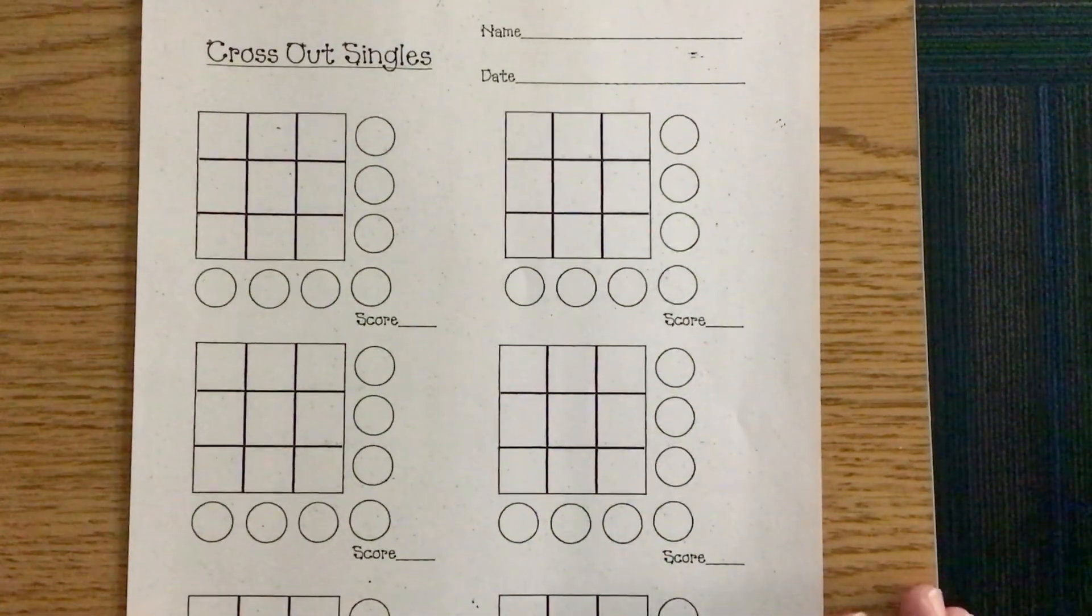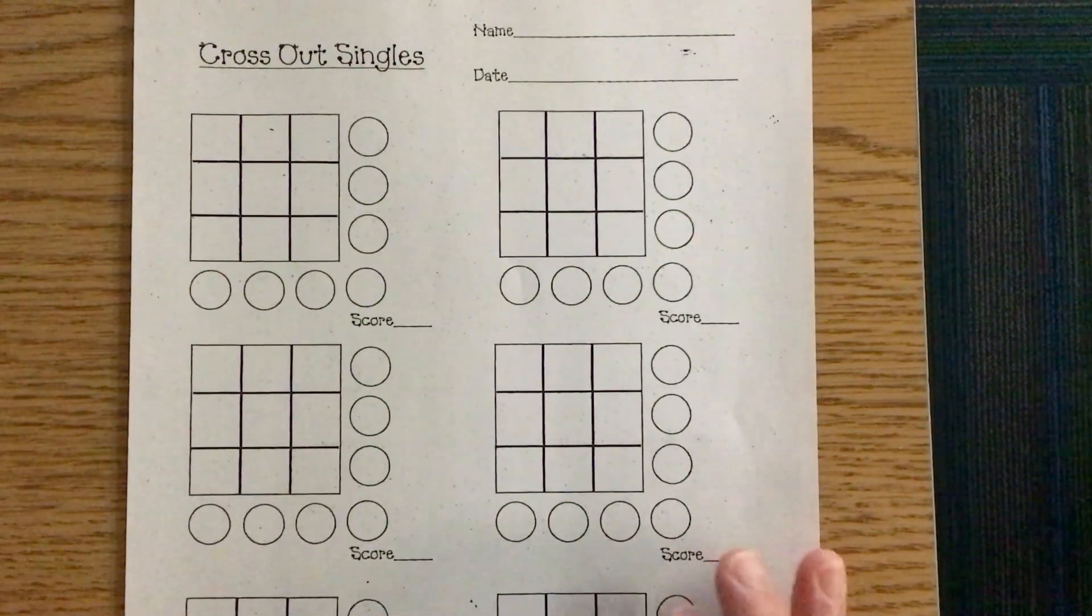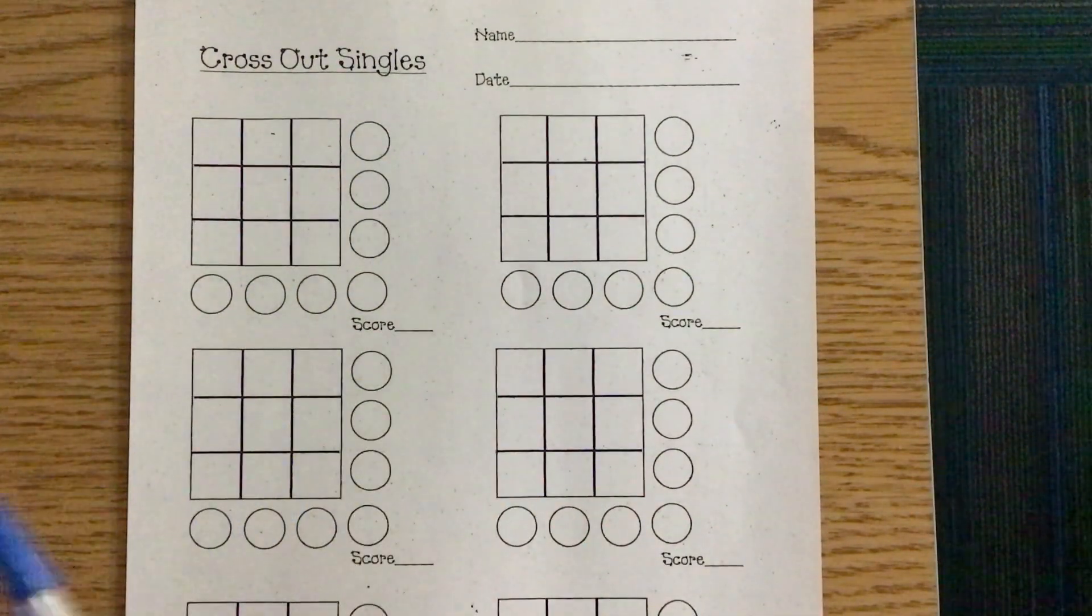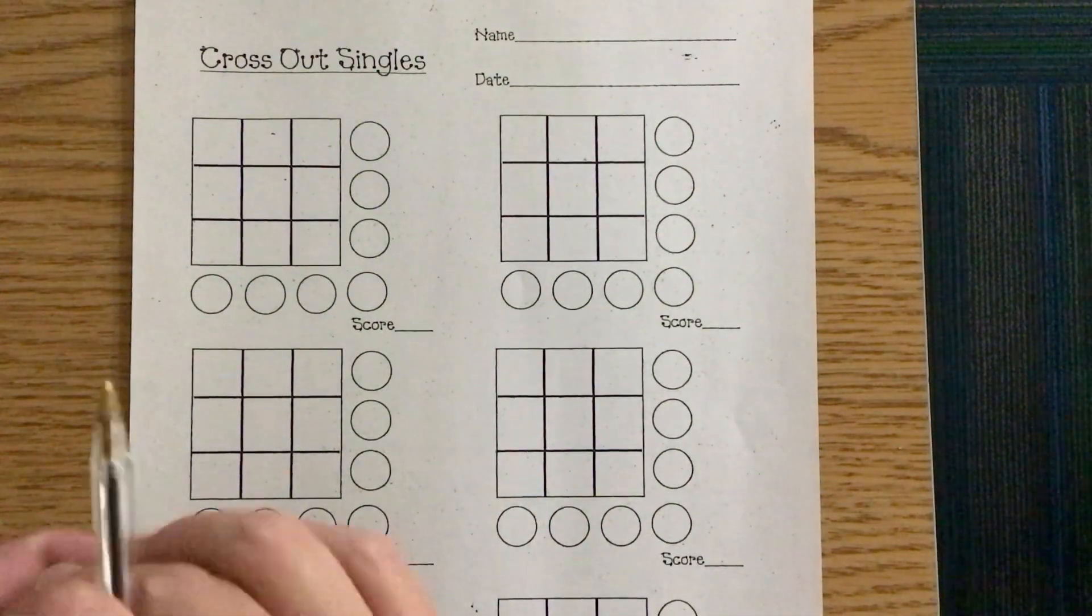Okay, here's a little how to play Cross Out Singles video. First thing you need is a paper, one of these papers, Cross Out Singles, one for you, one for your partner.